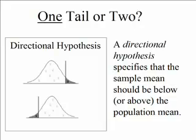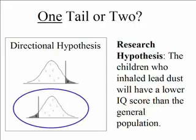That might be a diet where you're actually hoping to lose weight, and you would hope the sample mean is below the population mean. So when the researcher writes up the research hypothesis, they decide: am I expecting my sample mean to be above or below the population mean? In our case, the research hypothesis is that children who inhale lead dust will have a lower IQ score than the general population. So we're going to have a directional hypothesis — specifically, we predict that our sample mean will be below the population mean.